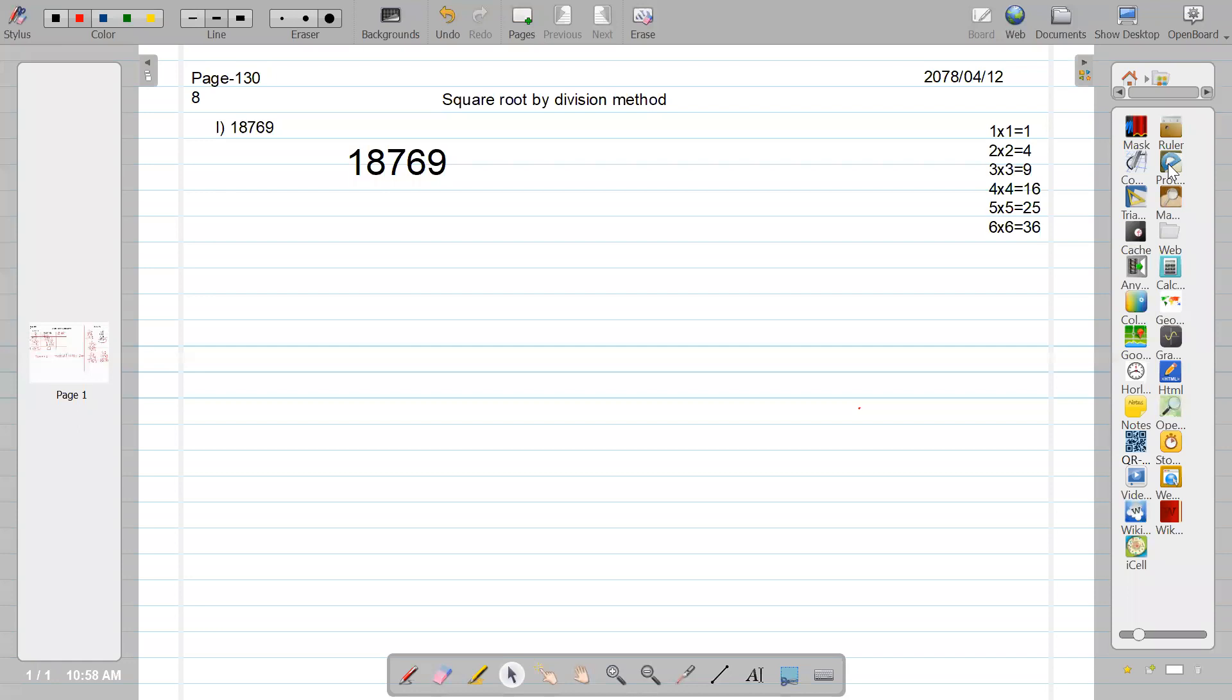Okay, square root by division method. We are calculating square root by division method. Now for that, the question is 18,769. This is the number 18,769.